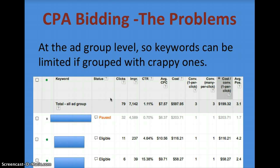The keyword with the cheapest conversion is being limited — it has a 2.4 average position, so it's probably having its bid limited because it's grouped with those other two more expensive keywords. One has since been paused because it was expensive. So that's a problem you run into — you have to have super tightly themed small ad groups with CPA bidding. That's the only way it's going to work; your keywords really have to perform the same.